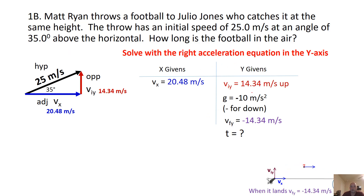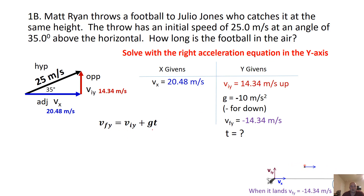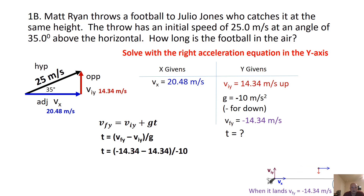We're going to solve with the right kinematic equation. We don't even have to worry about VX here — it's not asking anything about VX. We use all the Y-givens. There's an equation that goes with it: VF equals VI plus AT, which rearranges to VFY equals VIY plus GT. You plug in: VF is negative 14.34 minus 14.34, divided by negative 10, which gets rid of the negative. You get 2.87 seconds — that's how long the football was in the air.